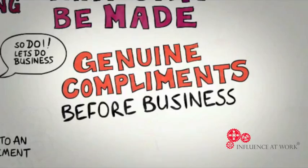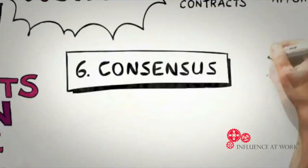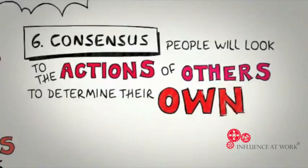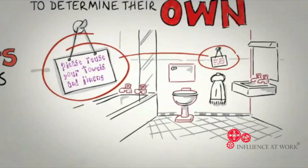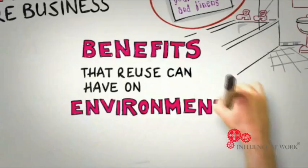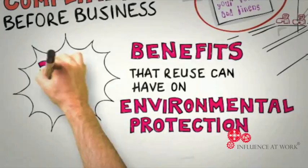The final principle is consensus. Especially when they are uncertain, people will look to the actions and behaviors of others to determine their own. You may have noticed that hotels often place a small card in bathrooms that attempt to persuade guests to reuse their towels and linen. Most do this by drawing a guest's attention to the benefits that reuse can have on environmental protection. It turns out that this is a pretty effective strategy, leading to around 35% compliance.